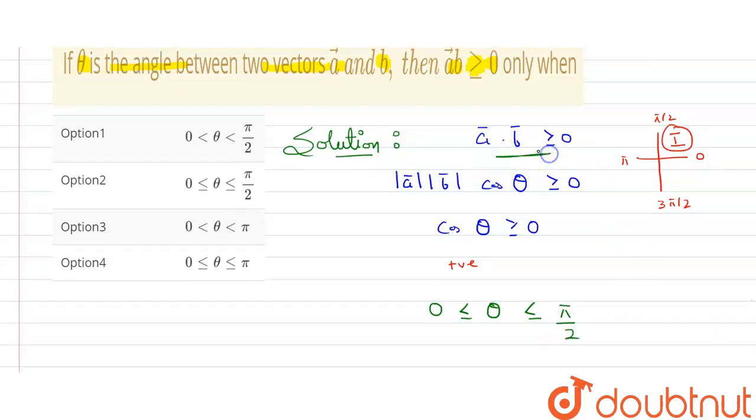Let's check it on options. Here you can see that option two is matching with the answer. Here theta is greater than and equals to zero and smaller than equals to pi by two. So this is our final answer. Thank you.